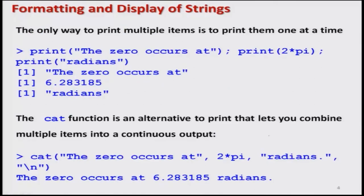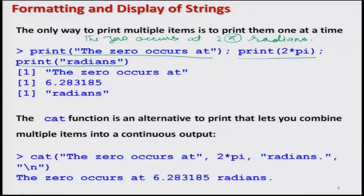We will try to see these things with some examples. Let us take the same example where we concluded our last lecture. We wanted to print '0 occurs at 2*pi radians' with the computed value of pi, and we were unable to do it. When we tried the print command with all strings in the same argument, we got an error message. Then we tried printing by giving three different print functions separated by semicolons, but the outcome was not in the way we wanted. The cat command can help us get the output in the required format.